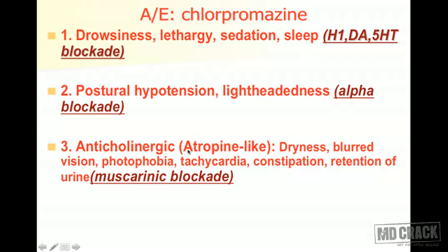The next adverse effect is the anti-muscarinic or atropine-like effect. Classical anti-cholinergic effects include dryness of mouth, blurring of vision, photophobia, retention of urine, and constipation. As far as the heart is concerned, it leads to tachycardia and palpitation. The blurring of vision and photophobia happen due to passive mydriasis and paralysis of the ciliary muscle, causing crowding of substances in the anterior chamber, increasing intraocular pressure, and precipitating glaucoma.